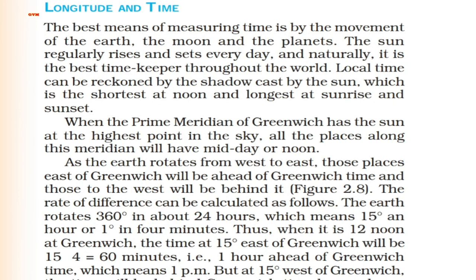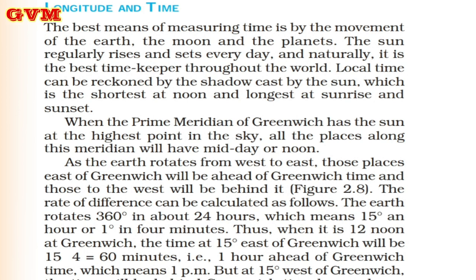Now we will learn about longitude and time. The best means of measuring time is by the movement of the Earth. The sun regularly rises and sets every day, and naturally it is the best time keeper throughout the world. Local time can be reckoned by the shadow cast by the sun, which is shortest at noon and longest at sunrise and sunset.